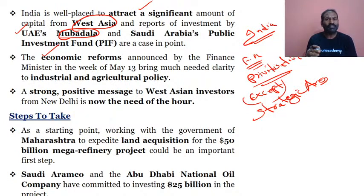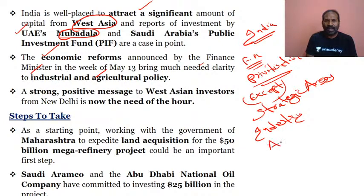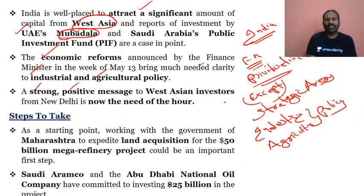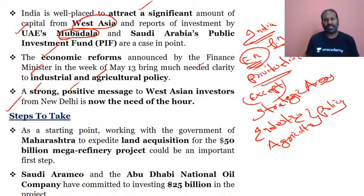The finance minister, under the five phases of the 20 lakh crore stimulus package, has brought much-needed clarity to industrial and agricultural policy. Privatization, except in strategic areas, has been clearly stated. A strong and positive message to West Asian investors from New Delhi is now the need of the hour. The finance minister and prime minister have done their job; now diplomatically we need to send a strong and positive message to West Asian foreign investors to come and invest in India.